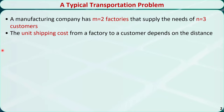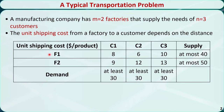A cost of shipping the products from a supply point to a demand point is involved. Here is an example. A manufacturing company has M=2 factories that satisfy the needs of N=3 customers. The unit shipping cost from a factory to a customer depends on the distance. For example, from factory 1 to customer 1, the unit shipping cost is $8 per product. From factory 1 to customer 2, the unit shipping cost is $6 per product, and so on.